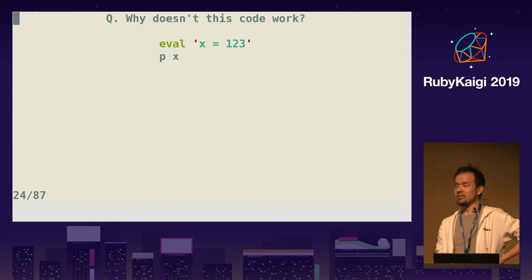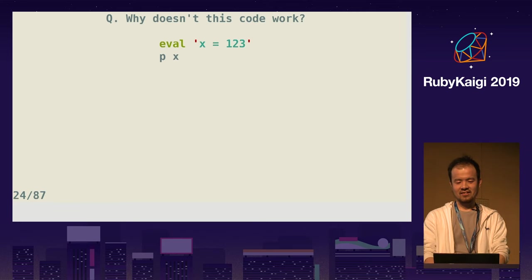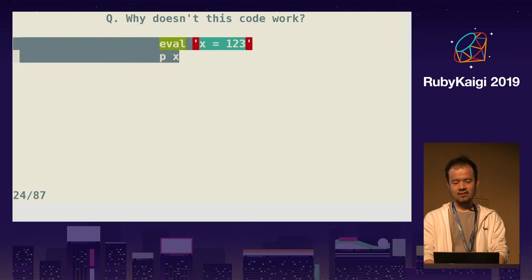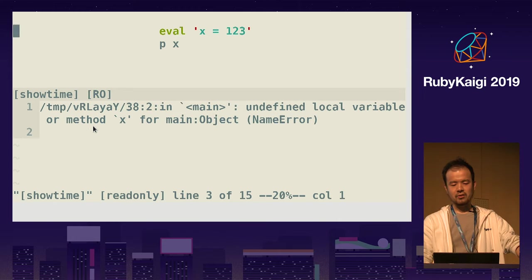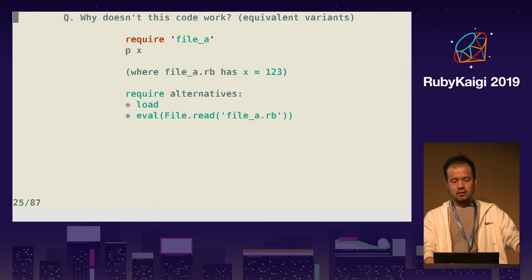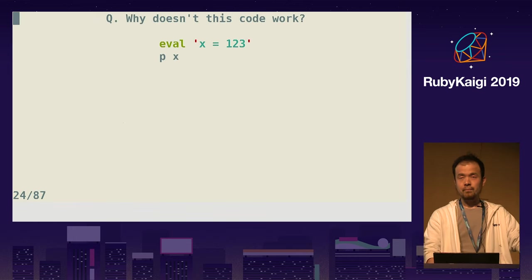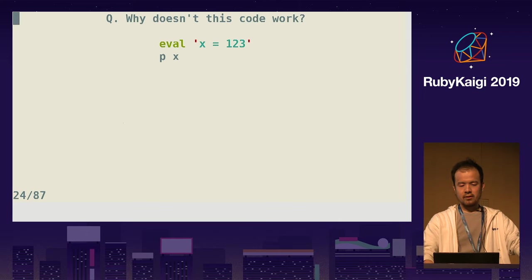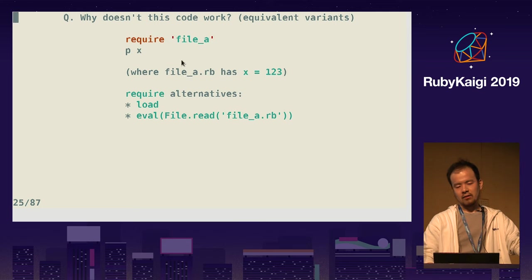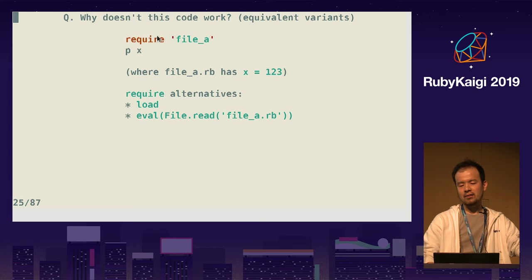Next question: this doesn't work — why? This raises a NameError: undefined local variable or method x. There are some equivalent questions to this. If you have a file, say file a, which has `x = [1,2,3]` and px, and you require the file expecting to get local variable x and px — it does not work, for the same reason.